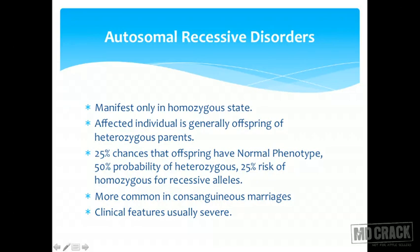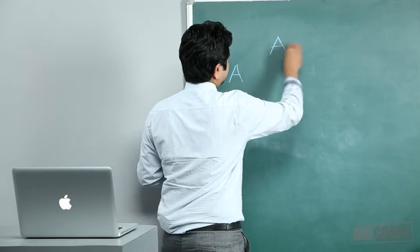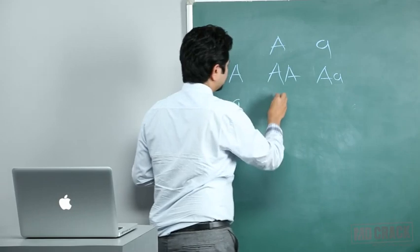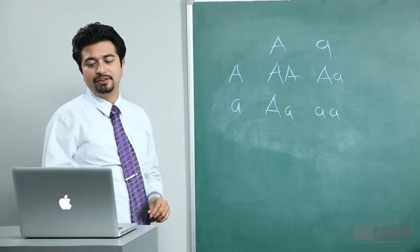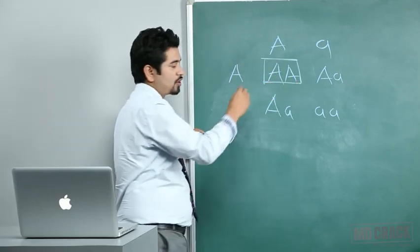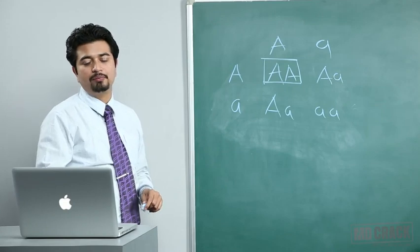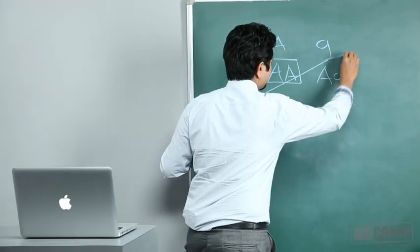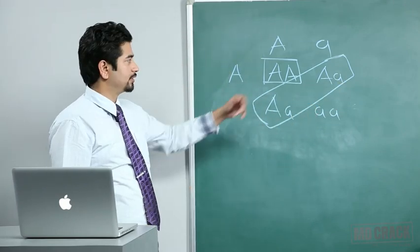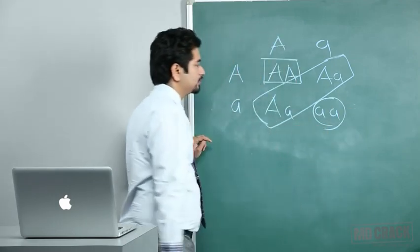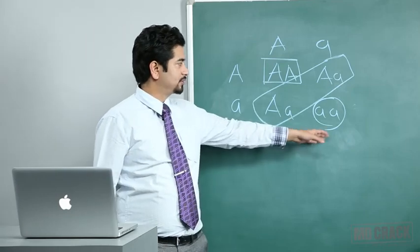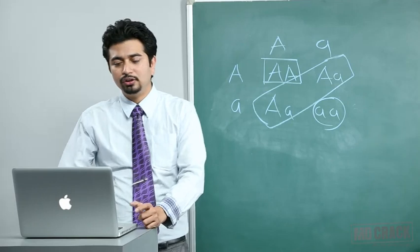In autosomal recessive inheritance, there is a 25 percent chance of an offspring having a normal phenotype, a 50 percent probability of being heterozygous, and a 25 percent chance of being homozygous recessive — meaning the child gets the disease. So one in four is normal, two in four are carriers, and one in four has the disease. This is the typical inheritance pattern of an autosomal recessive disorder.